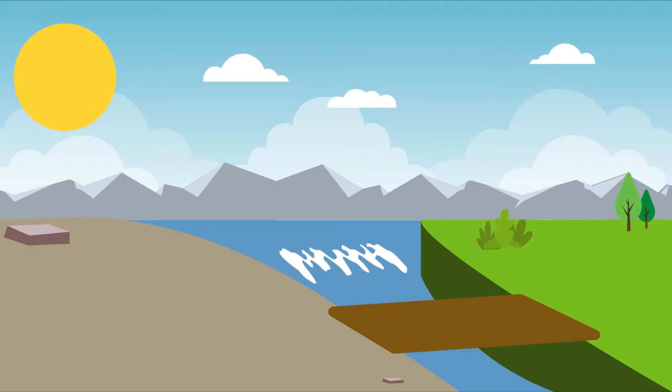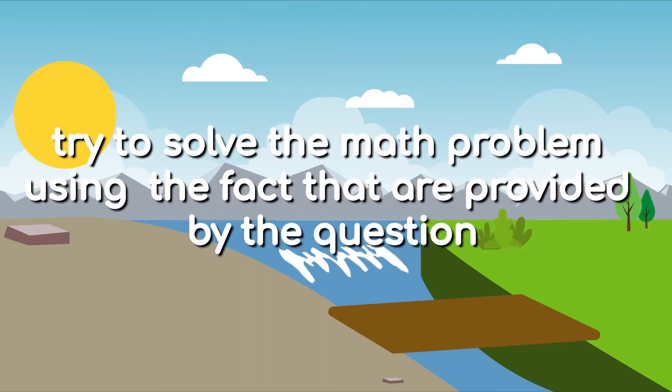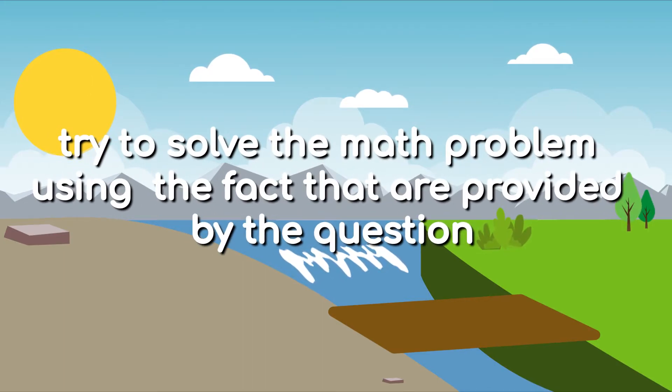What is it actually? Fact Family Multiplication is basically when we try to solve the math problem using the facts that are provided by the question. Since math is a fact, we can use the fact to solve all problems.